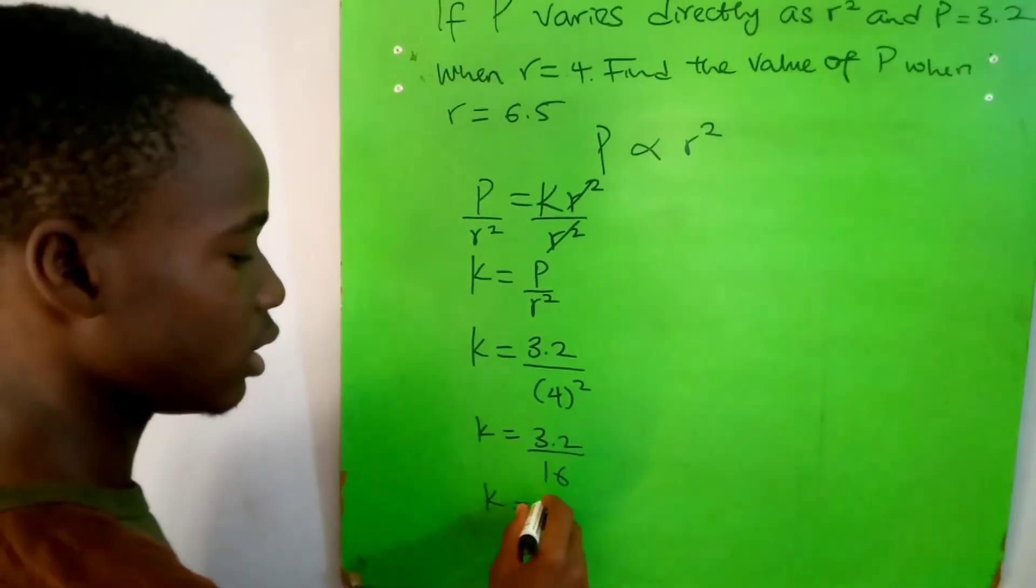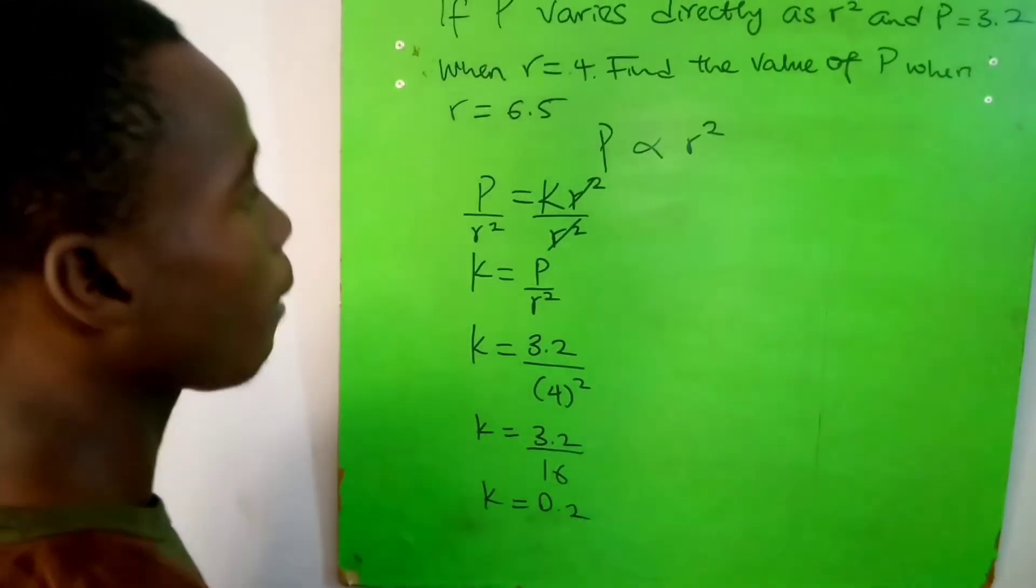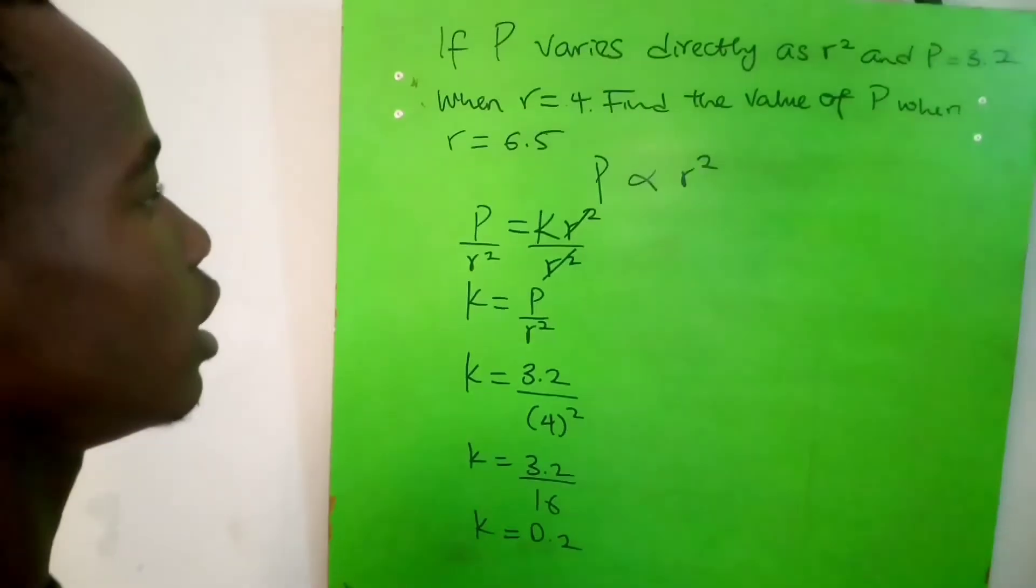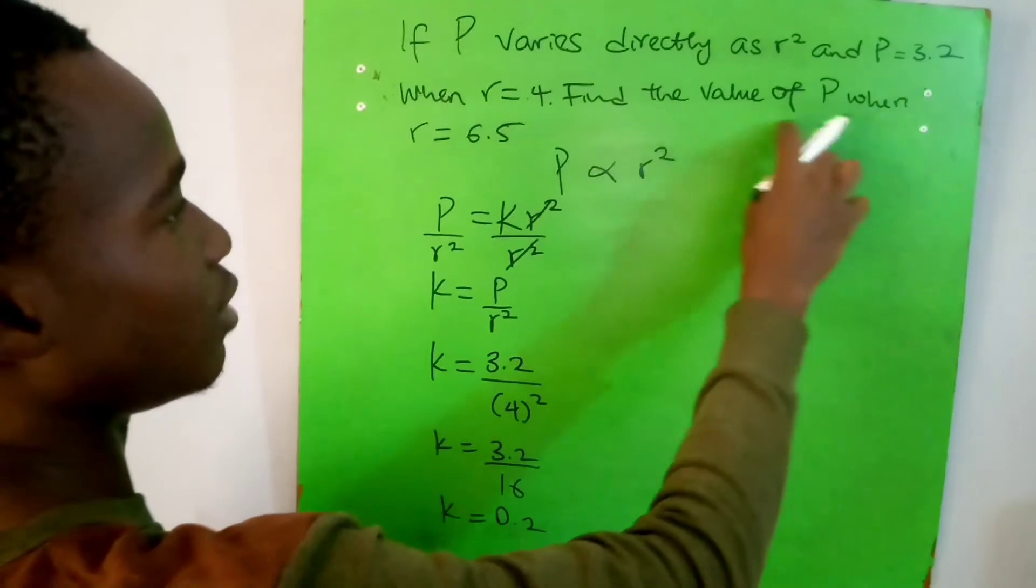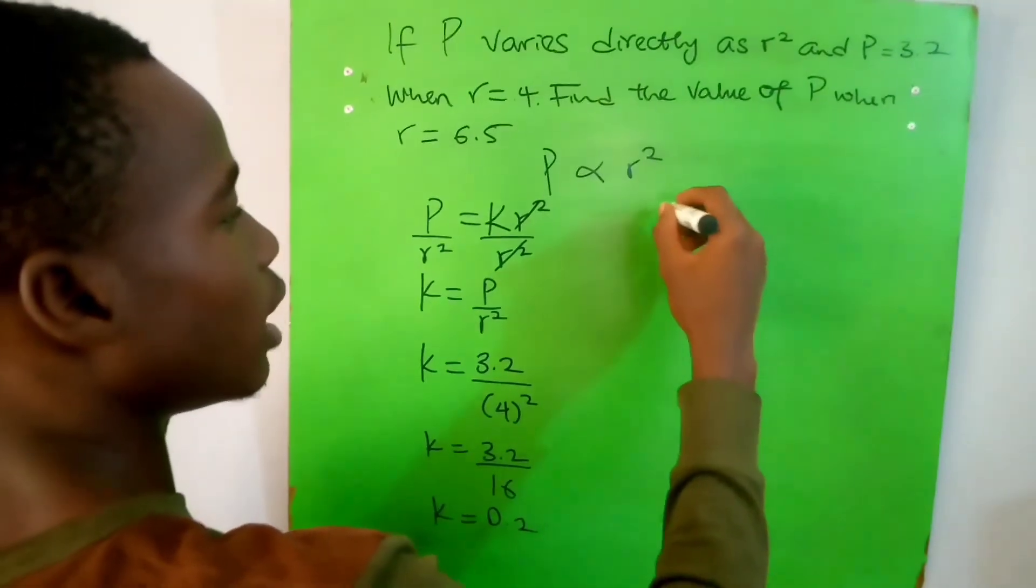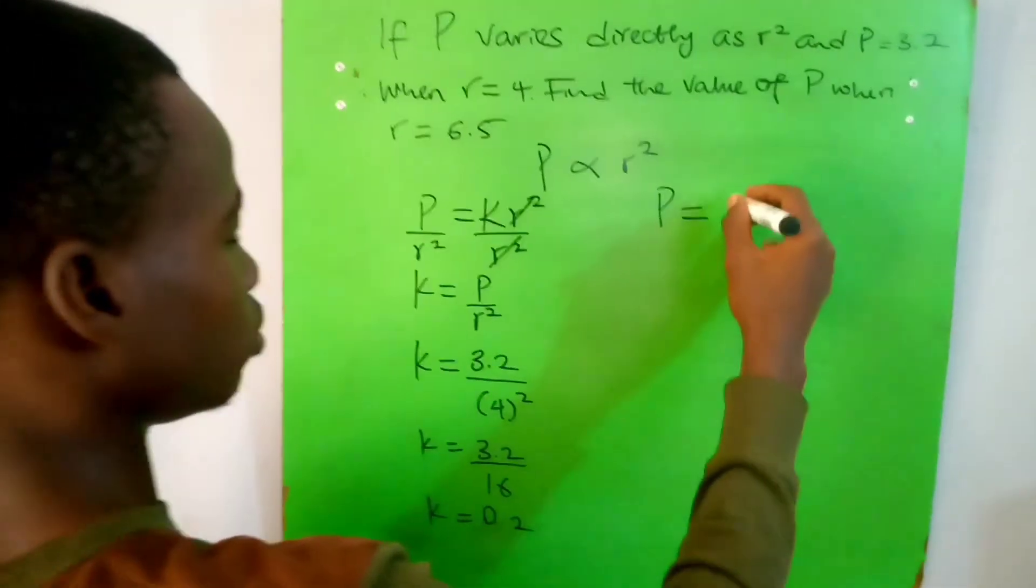Now we'll substitute the value of k into this equation to find the value of P. We have P equals... Okay, so now we have found the value of k.